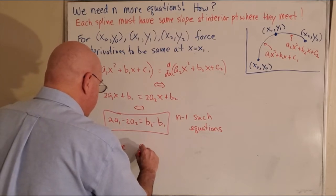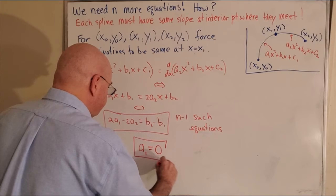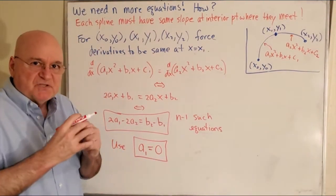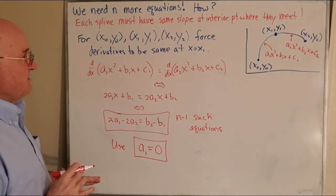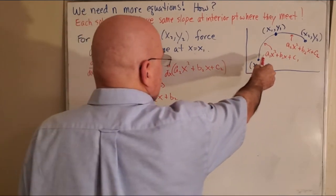Use a1 = 0. That's your last equation. So a1, just give it the value zero. What that does is force a1x² to go away.